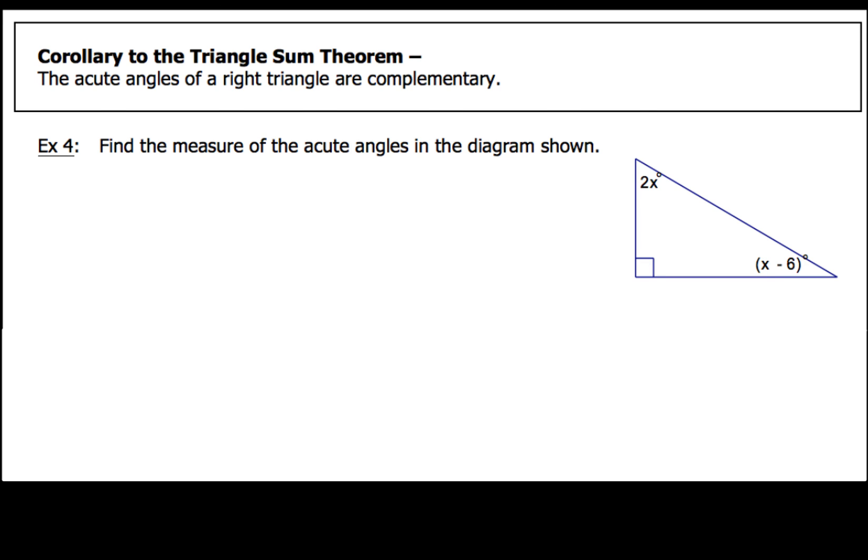So when we go to set up this equation, instead of doing the equation 2x plus x minus 6 plus 90 equals 180, what we can do is just go ahead and use the corollary to the triangle sum theorem to set up an equation that would look like this. 2x plus x minus 6 equals 90. Now 2x and x, that gives me 3x minus 6 equals 90. 3x gives me 96. Then when I divide both sides by 3, I end up with 32 for x.